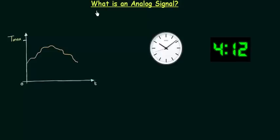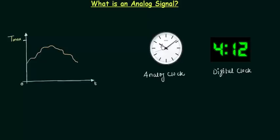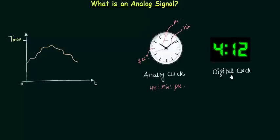Before going to the actual idea, let me first tell you the difference between the analog clock and the digital clock — why we call this analog and why we call this digital. So this one is the analog clock and this one is the digital clock. In the analog clock you can see we have three hands: the hours hand, the minutes hand, and the seconds hand. So this clock can represent time as hour, minute, and second, and it can take any value in 24 hours.